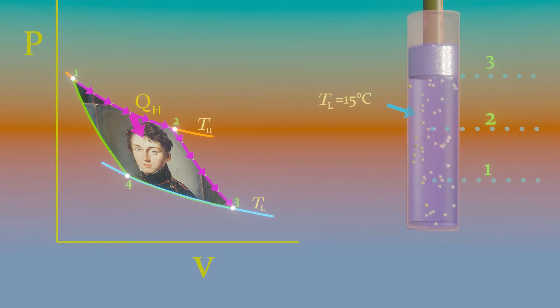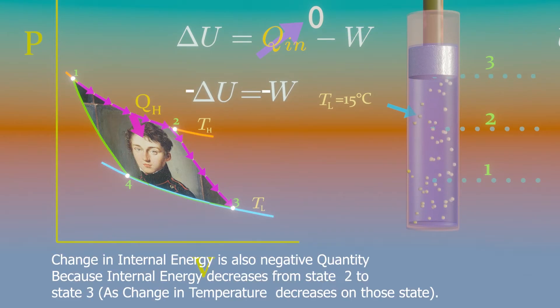You can verify this expansion process using first law. For adiabatic there is zero heat transfer, so change in internal energy must equal work done by the system. And for ideal gas, internal energy is a function of temperature change only. So when temperature changes, the system does work by raising the piston upward.